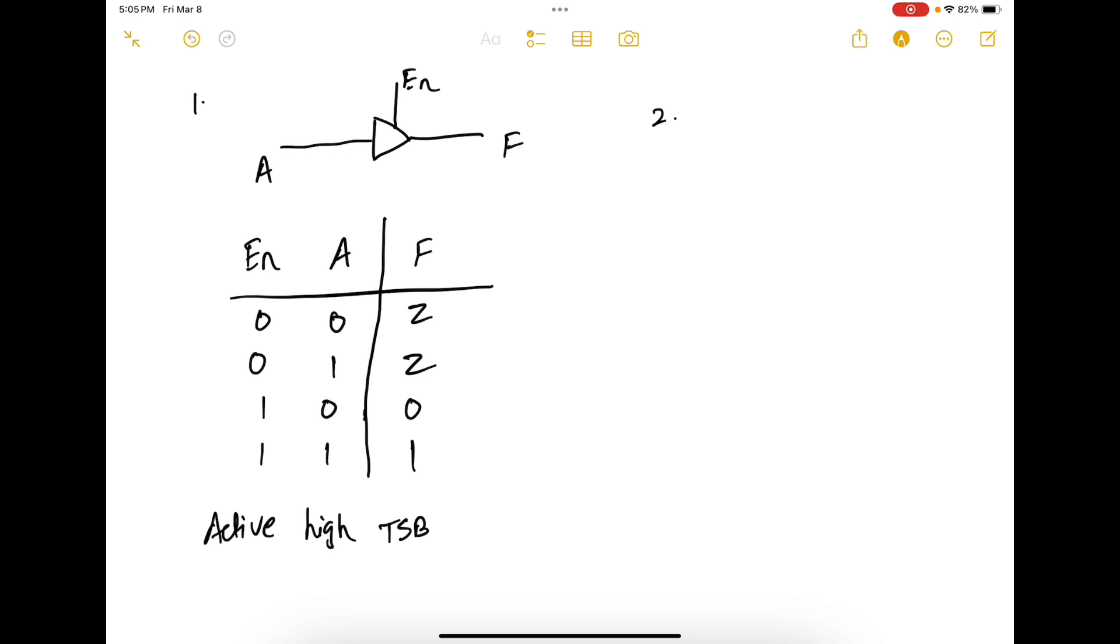Now let's look at another configuration in which it can be used. You have A, tri-state buffer with an inverter. You have enable and then F. As you can see, this performs as a NOT gate.